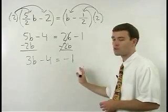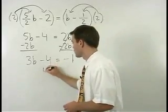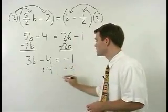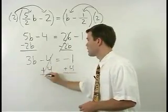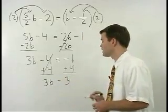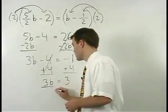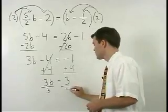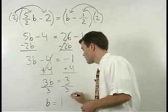Now we can move our numbers to the right by adding 4 to both sides and we get 3b equals 3. Divide both sides by 3 and b equals 1.